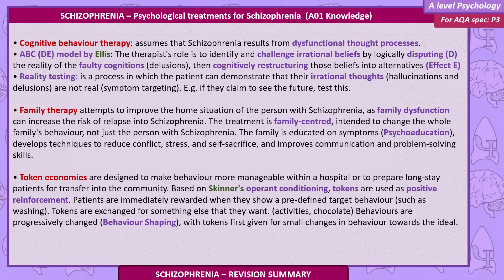Reality testing is the process in which the patient can demonstrate that their irrational thoughts — hallucinations and illusions — are not real. This is known as symptom targeting. For example, if they claim to see the future, you test this.